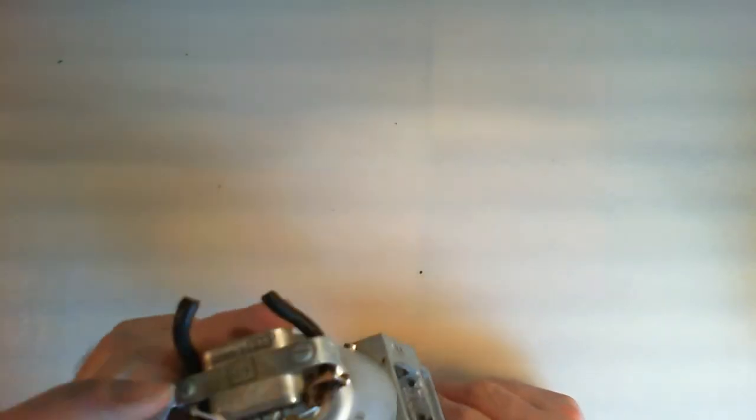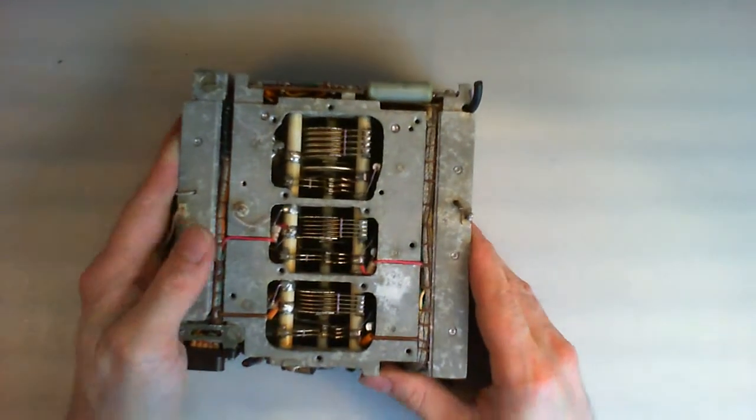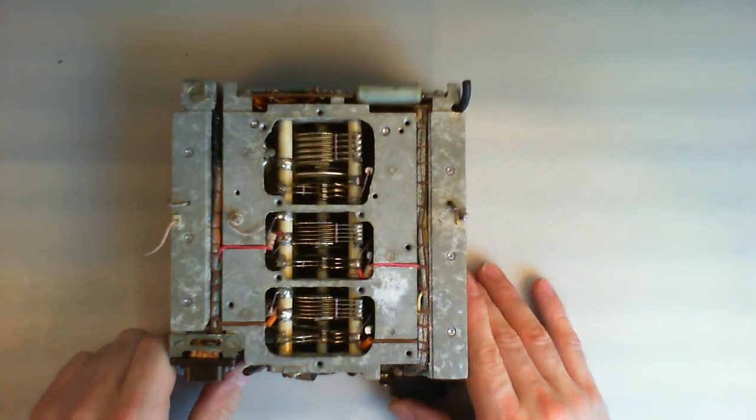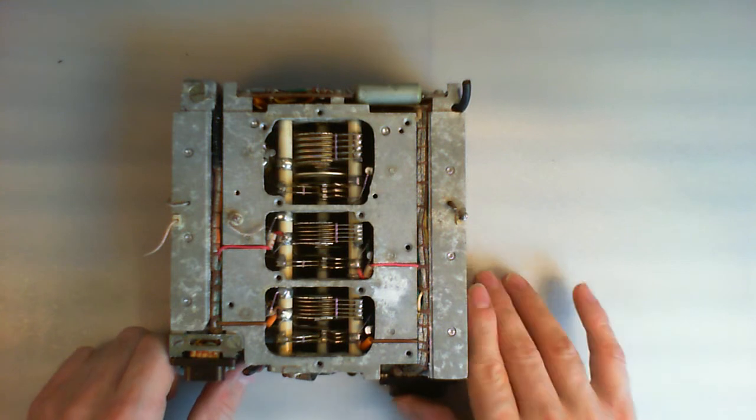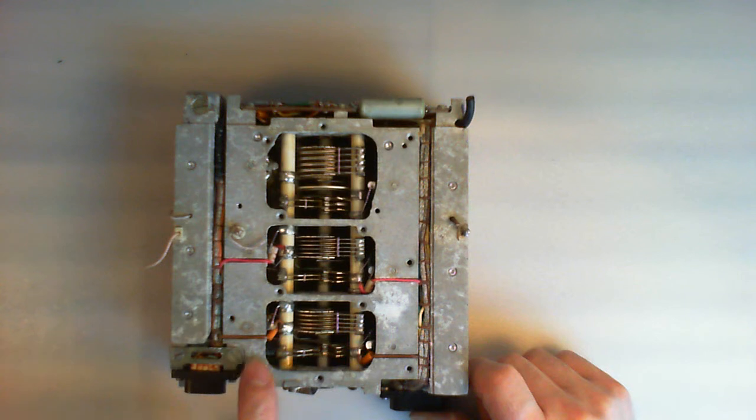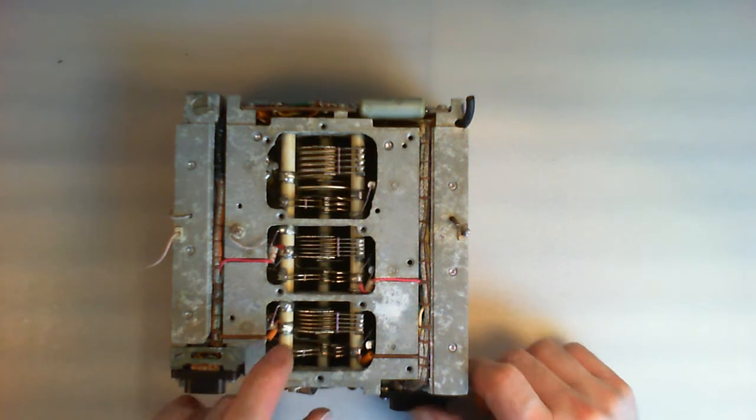So here you are, here you have one more relay. So this module here is the main, excuse me for the lightning, it is quite bad today. Too much sun outside. So this is the main variable capacitor gang.